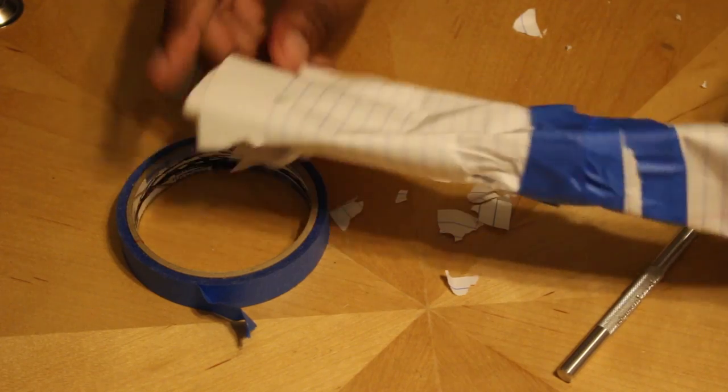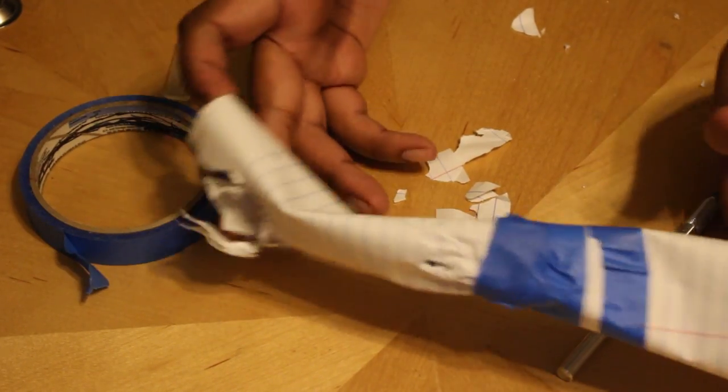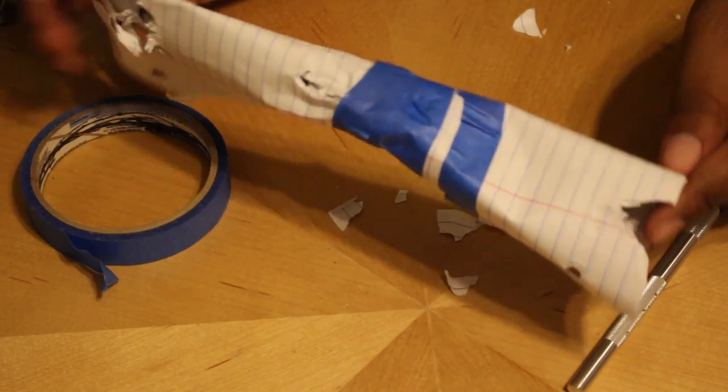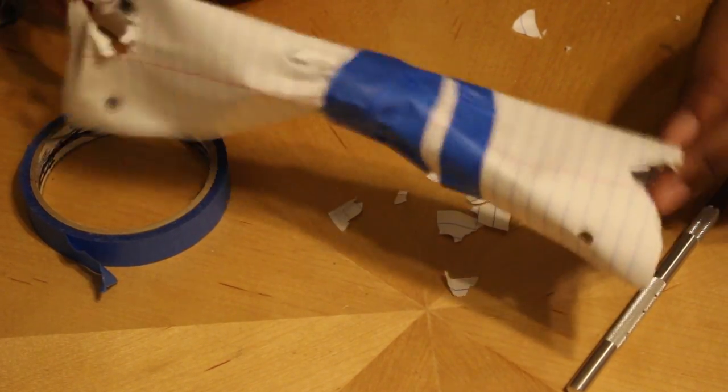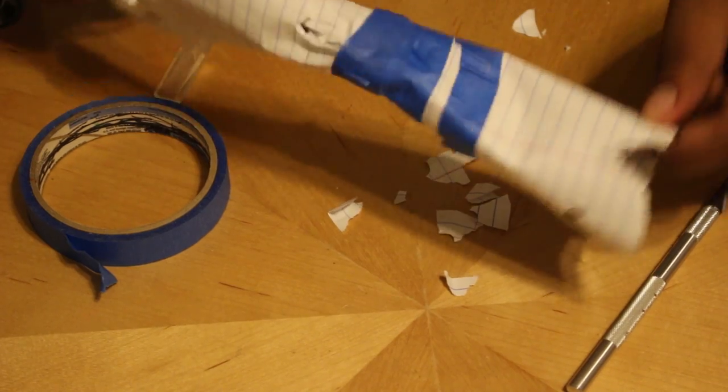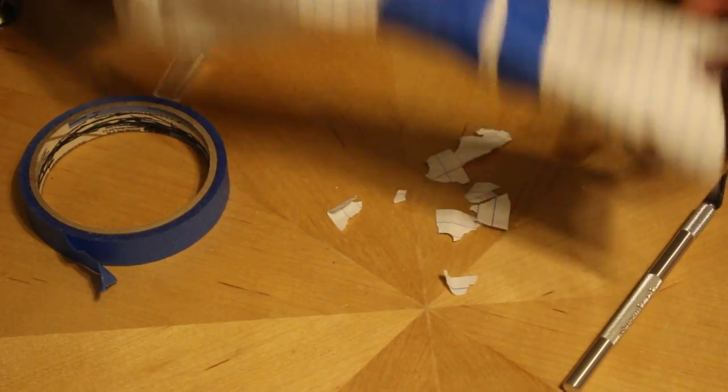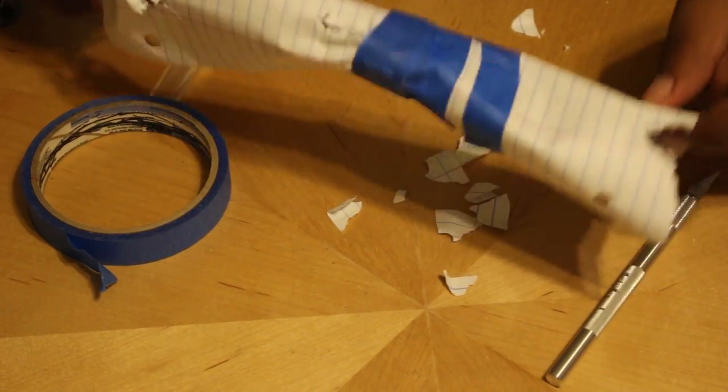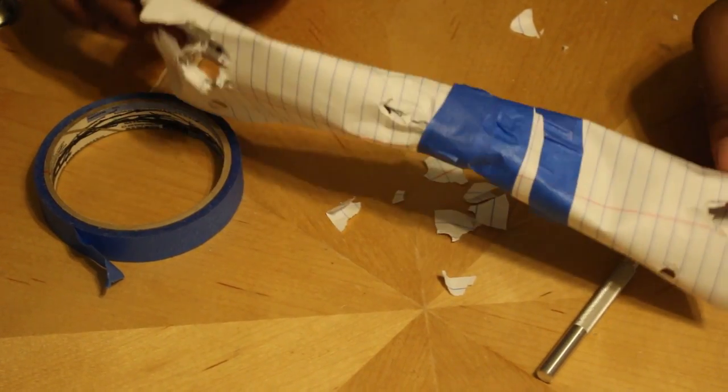So, now we got a flute. See that? This is what your flute should look like. If your flute does not look like this, then you fail. Okay? It better not look like any other thing. It better look exactly like this. You fail if you didn't do this. Okay? Good.